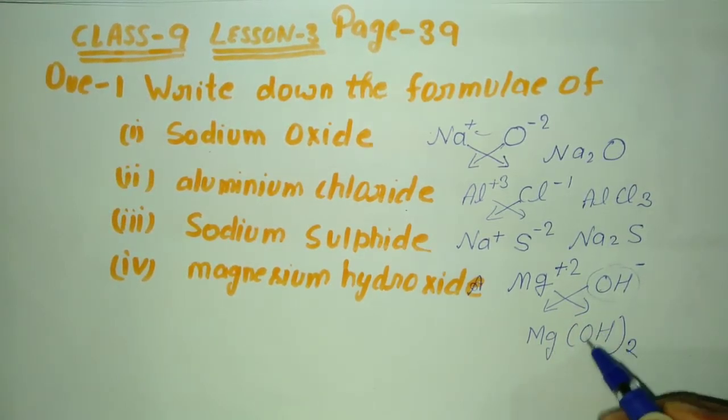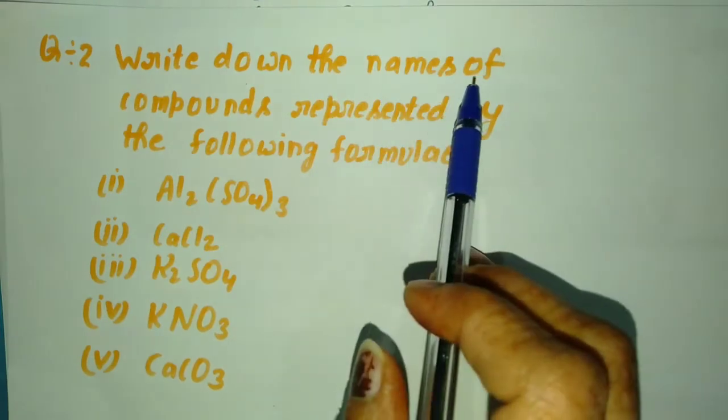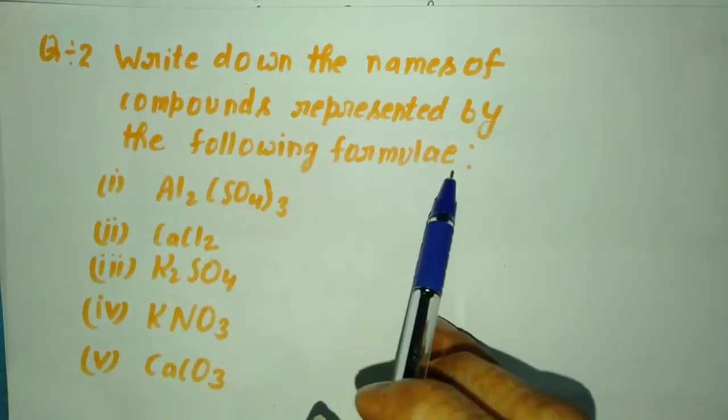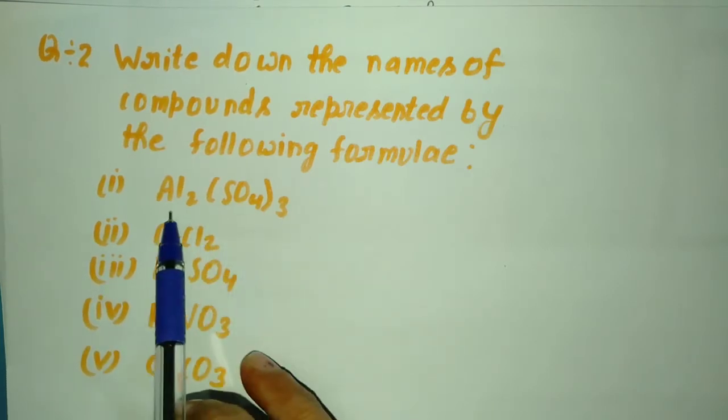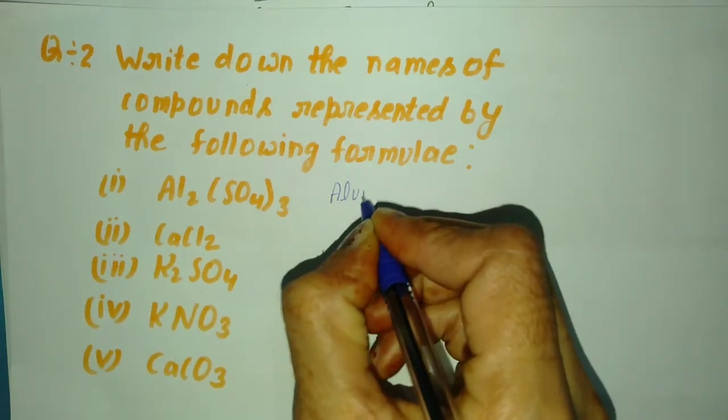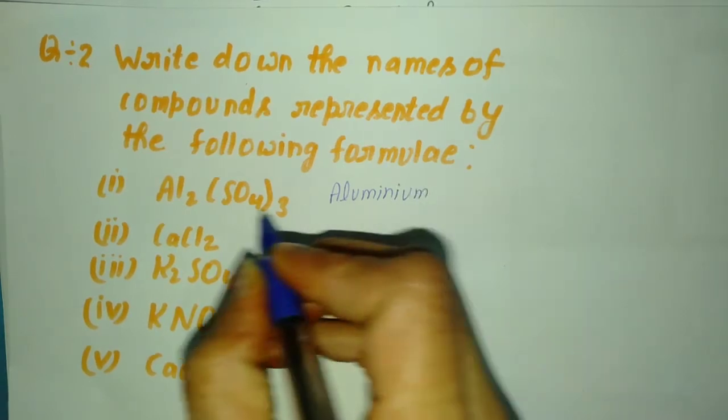Question two: write down the names of compounds represented by the following formulas. Al2(SO4)3 - Al2 means aluminum, and SO4 means sulfate. So this is aluminum sulfate.